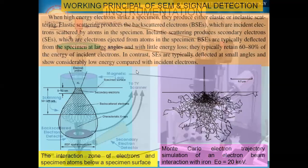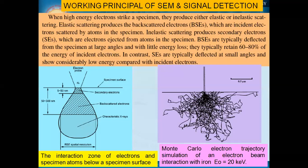Once we have completed the instrumentation part, let's look at how the beam interacts with the sample. The electron beam falls on the specimen surface. When high-energy electrons strike the specimen, they produce either elastic or inelastic scattering. Elastic scattering produces backscattered electrons, which are incident electrons scattered by atoms in the specimen.